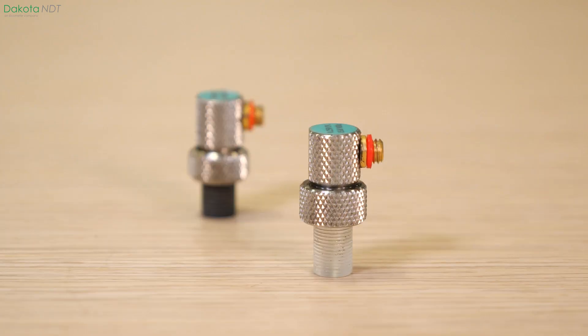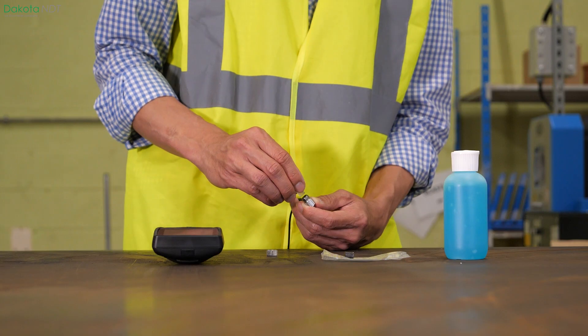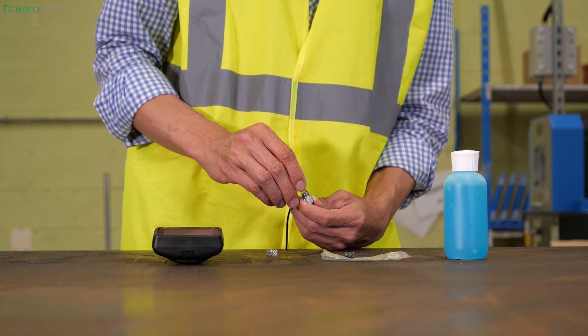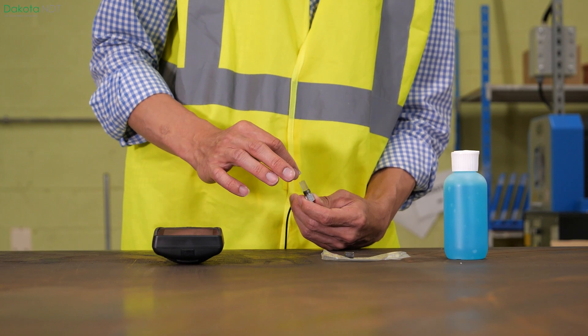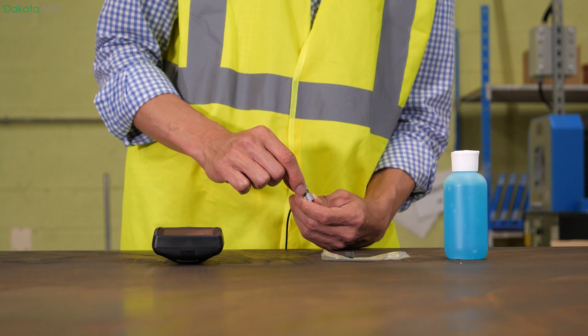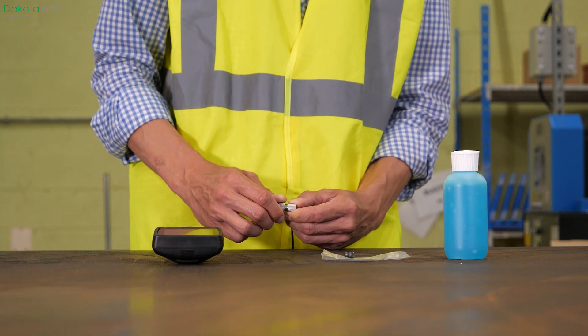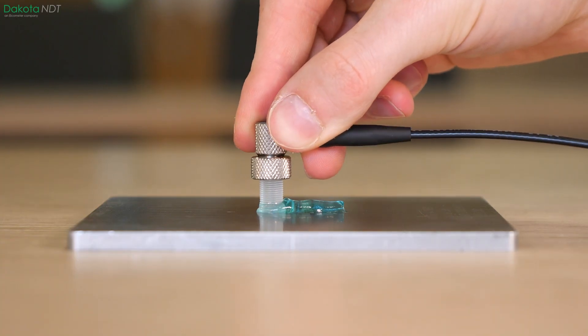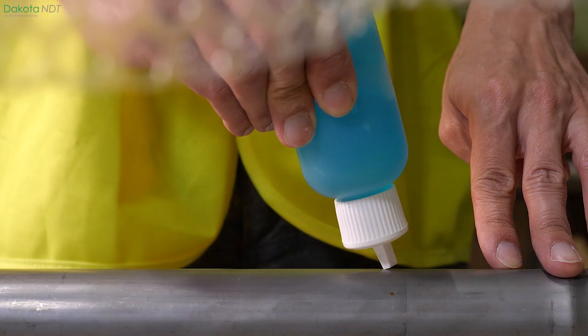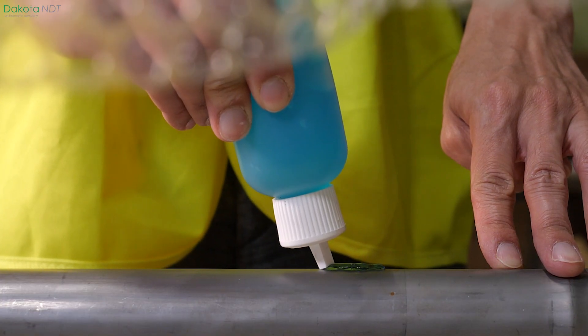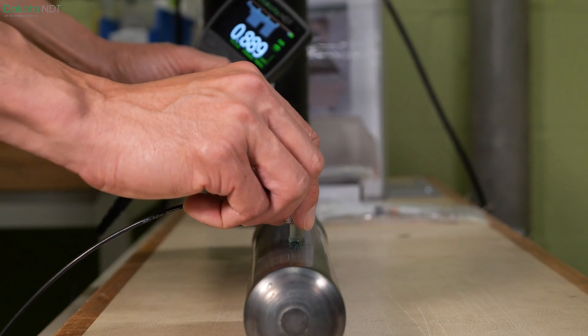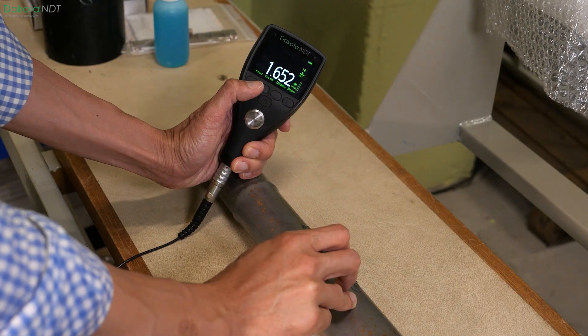There are also different lengths of delay line and the one that is best suited for your application is typically dependent on the thickness and density of the material you are measuring. For example, a 12mm acrylic delay line is best used on thicker materials and provides greater accuracy on noisy materials.